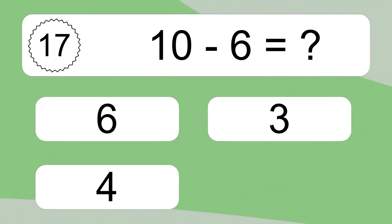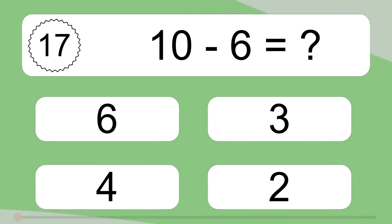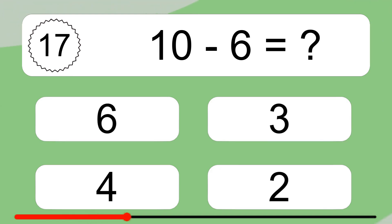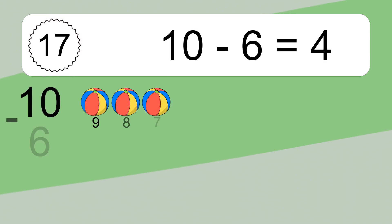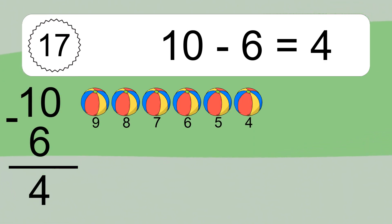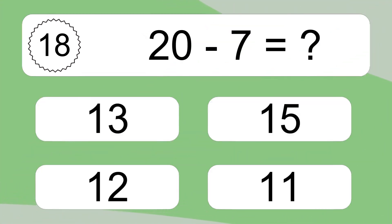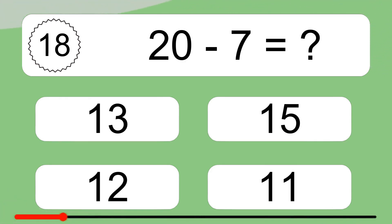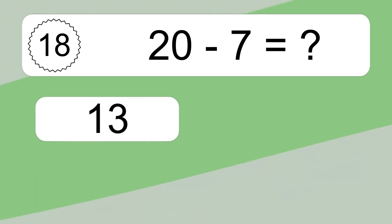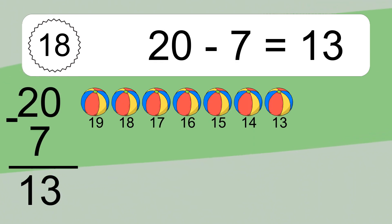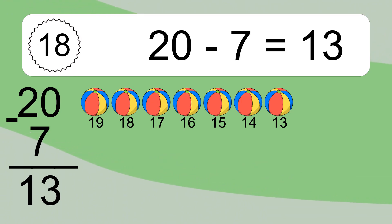10 minus 6 equals what? 10 minus 6 equals 4. Let's count it: 9, 8, 7, 6, 5, 4. 20 minus 7 equals what? 20 minus 7 equals 13. Let's count it: 19, 18, 17, 16, 15, 14, 13.